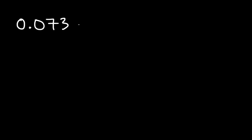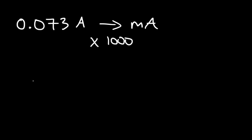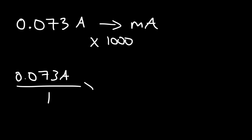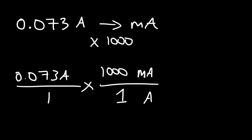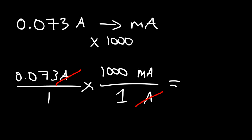Let's convert 0.073 amps into milliamps. Going from amps to milliamps, we multiply by 1,000. Put amps on the bottom and milliamps on top — 1 amp equals 1,000 milliamps. The unit amps cancels and the 1,000 is on top, so multiply 0.073 times 1,000 by moving the decimal point 3 units to the right. This gives us 73 milliamps.